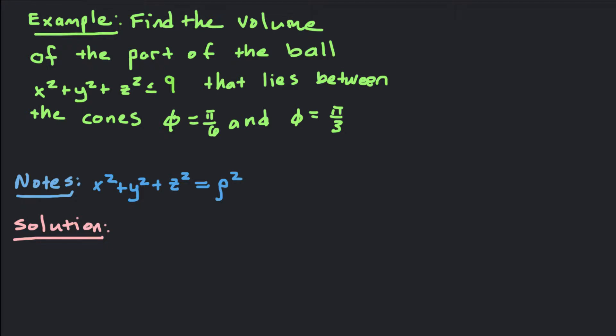Hey guys, what's up? Today we got a triple integral. We're going to look at finding the volume of the part of the ball x² + y² + z² ≤ 9 that lies between the two cones φ = π/6 and φ = π/3.